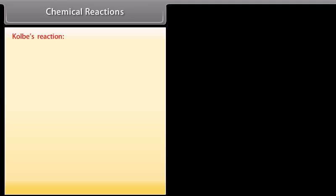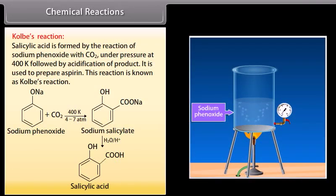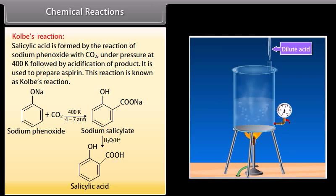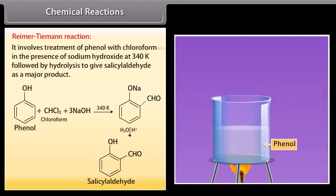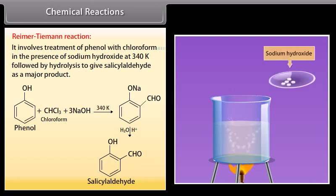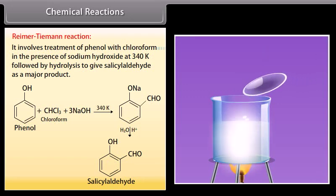Kolbe's reaction: salicylic acid is formed by the reaction of sodium phenoxide with carbon dioxide under pressure at 400 K, followed by acidification of the product. It is used to prepare aspirin. This reaction is known as Kolbe's reaction. Reimer-Tiemann reaction: it involves treatment of phenol with chloroform in the presence of sodium hydroxide at 340 K, followed by hydrolysis to give salicylaldehyde as a major product.